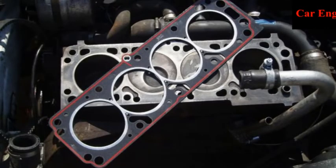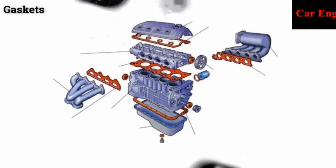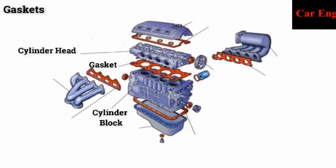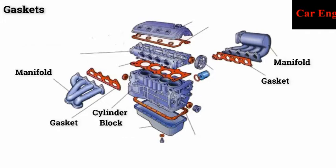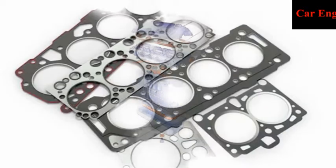Gaskets are used to provide a tight fitting joint between two surfaces. Gaskets are found in the joint between the cylinder head and the cylinder block, between the crankcase and oil pan, and in between the cylinder block and manifold.